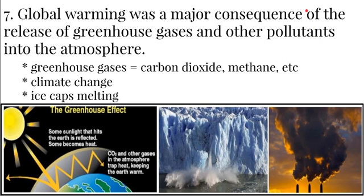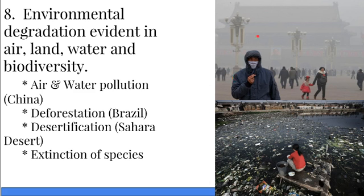Global warming has become a major consequence. The increased amount of carbon dioxide, methane, and other greenhouse gases is trapping heat from sunlight within our atmosphere, increasing temperatures, which is going to cause the ice caps to melt and bring catastrophic effects in the near future. Pollution is a big issue — some places have a lot of environmental degradation and air pollution. In China, the pollution in the capital Beijing can be so bad at times that you can't breathe outside, and you can't even see the sky or the sun.